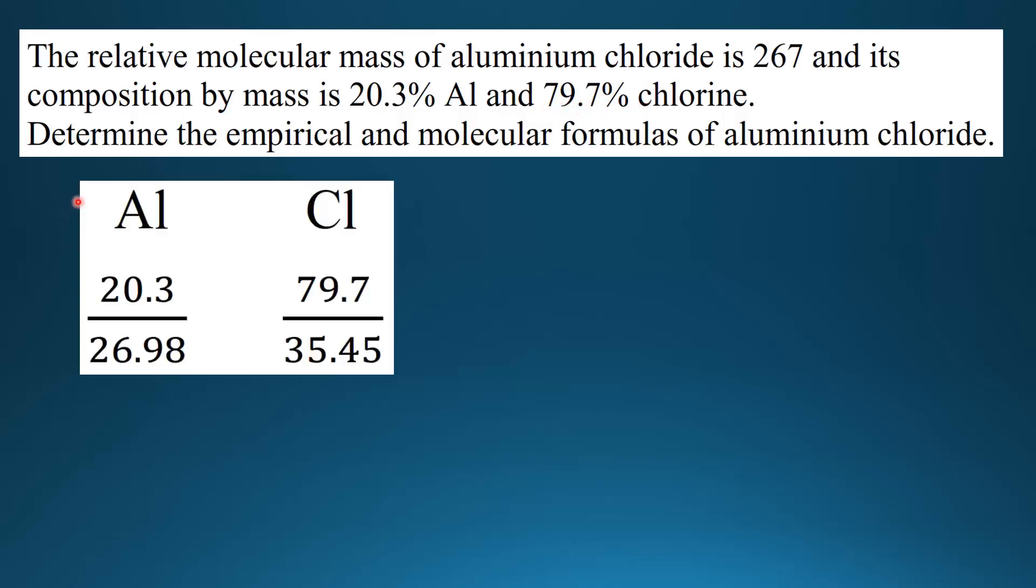We'll start with the empirical formula. The method we're going to use can be used for all empirical formula problems. We start by writing all the elements that make up the compound. In this case it's aluminium and chlorine.